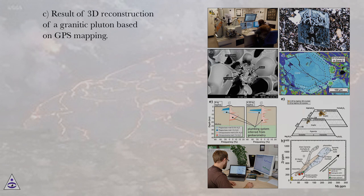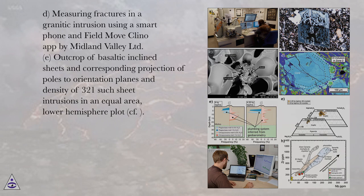(D) Measuring fractures in a granitic intrusion using a smartphone and FieldMove Clino app by Midland Valley Ltd. (E) Outcrop of basaltic inclined sheets and corresponding projection of poles to orientation planes and density of 321 such sheet intrusions in an equal area, lower hemisphere plot.